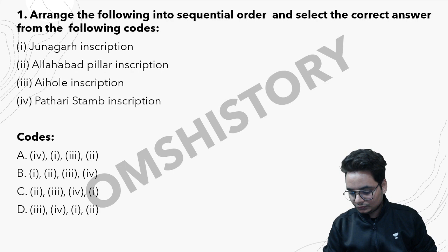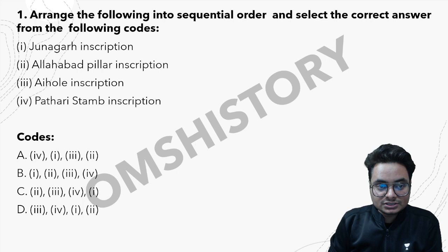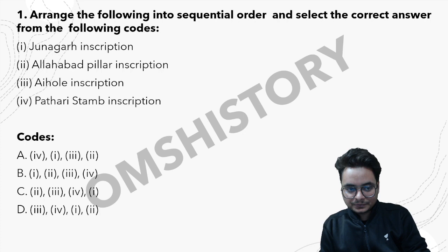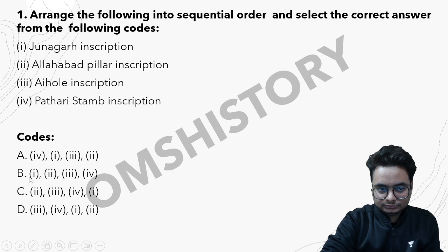This is the first question: arrange the following into sequential order and select the correct answer from the codes given. The items are: Junagadh inscription, Allahabad pillar inscription, Aihole inscription, and Pathari stump inscription. Options are provided on the slide — you can pause to read them.